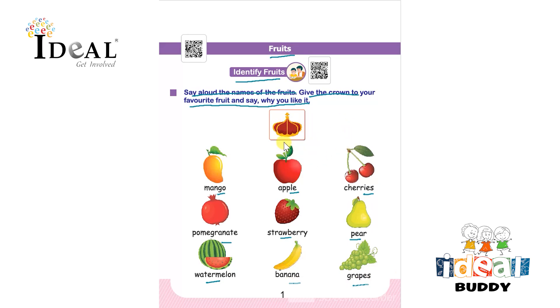So the child has to give this crown to their favorite fruit and say why they like it. For example, if their favorite fruit is mango, they have to give this crown to mango and say a few words about why they like that particular fruit.